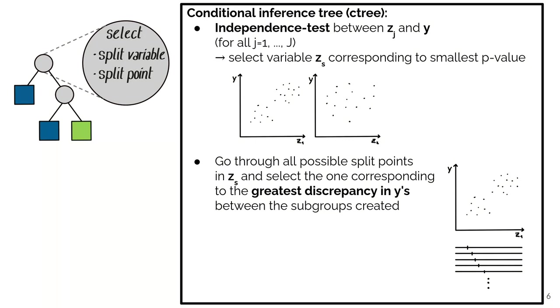And then once we selected the split variable we have to select the split point. And so what we do there, we go through all possible split points in the selected split variable and select the one corresponding to the greatest discrepancy in y between the subgroups created.